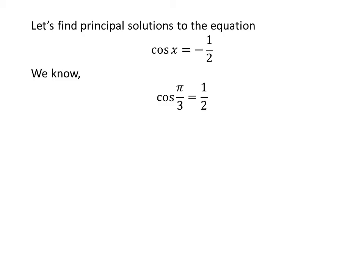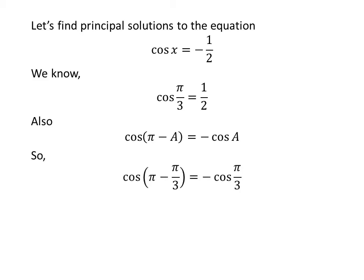We know the value of cosine of pi upon three is half. We also know the trigonometric identity cosine of pi minus a is equal to minus cosine of a. Applying this identity, cosine of pi minus pi upon three equals minus cosine of pi upon three. Since pi minus pi upon three equals two pi upon three, we get cosine of two pi upon three is equal to minus half.